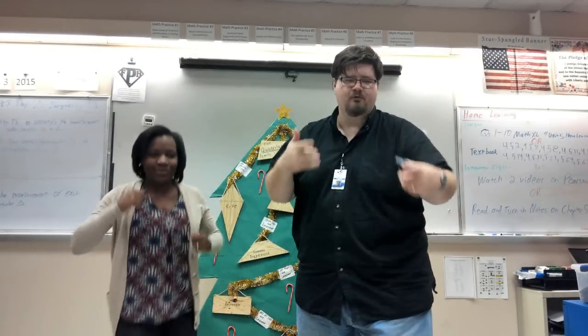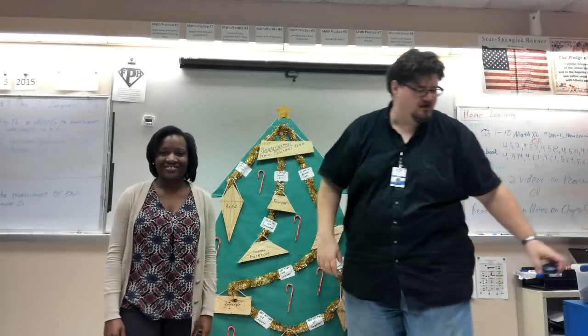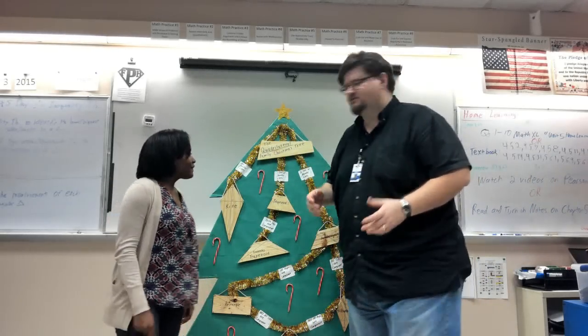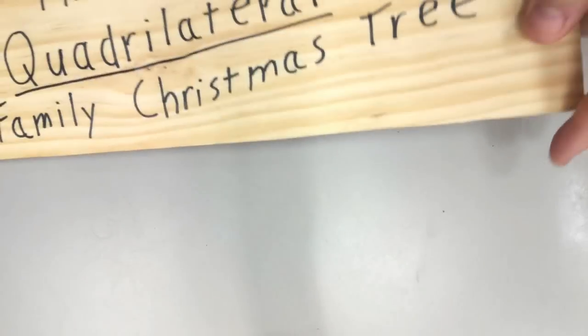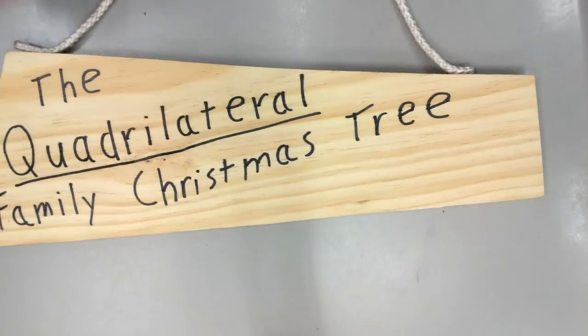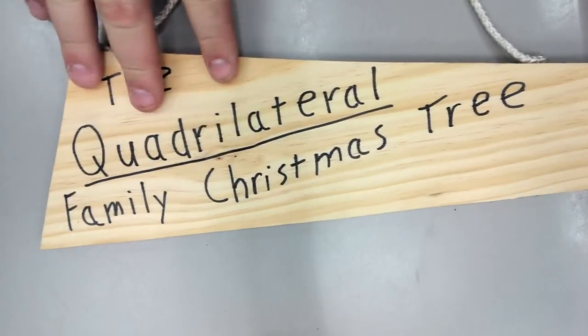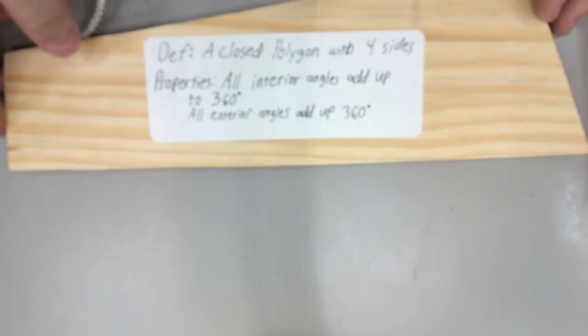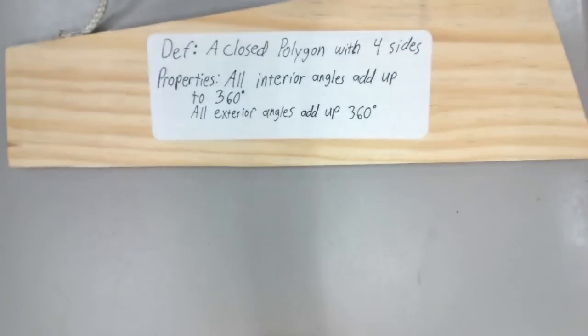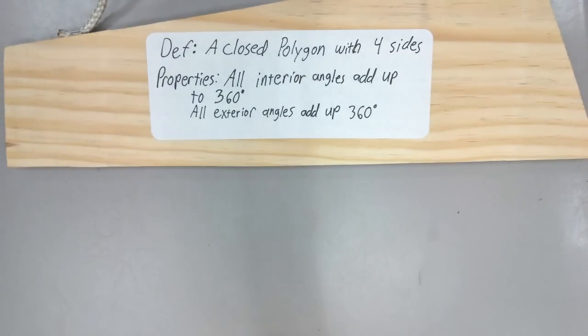We are going to take the properties of quadrilaterals. The first thing at the top of your quadrilateral family is the quadrilateral itself. There's nothing special about it, so we have no markings at all. However, there are some properties that go with quadrilaterals. The definition of a quadrilateral is it's a closed polygon with four sides. The properties are that all interior angles sum to 360 and all exterior angles sum to 360.